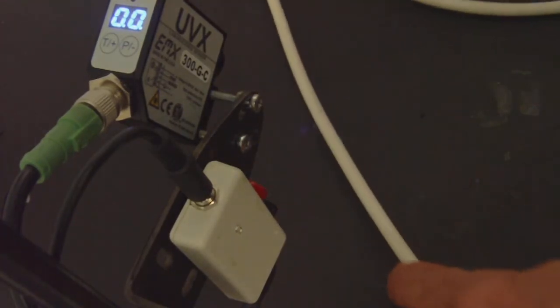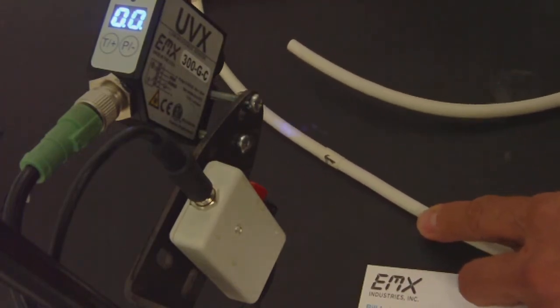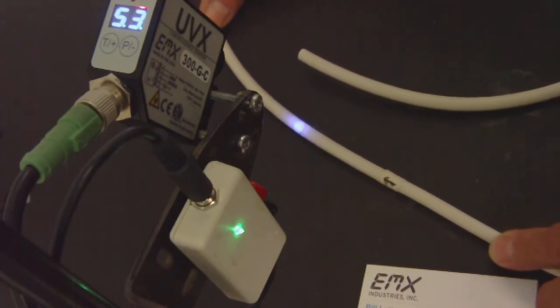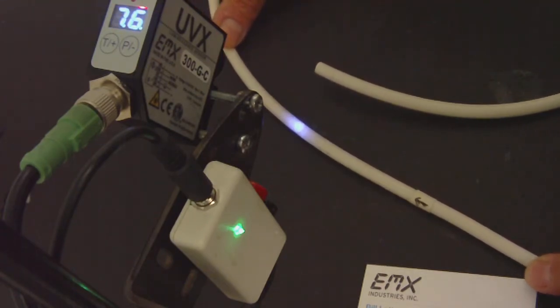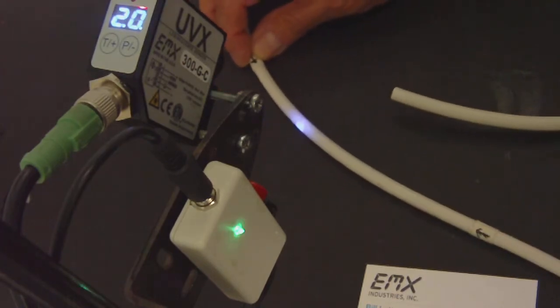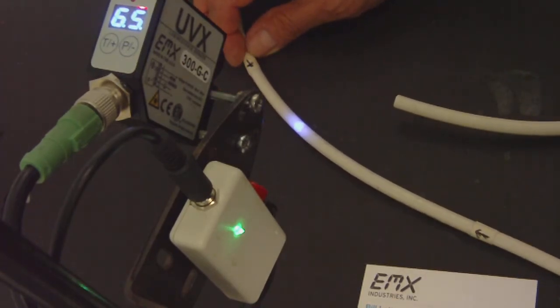If I move over to the area that is coated with the UV material, I can see that the signal goes much higher and activates the output. So it can easily detect the presence of the coating on the cable.